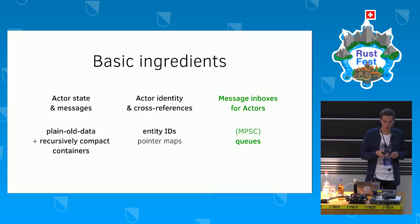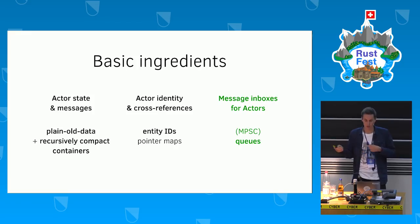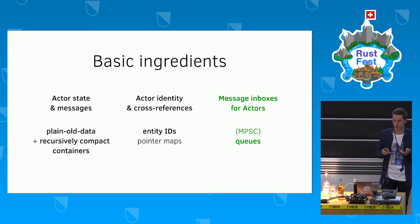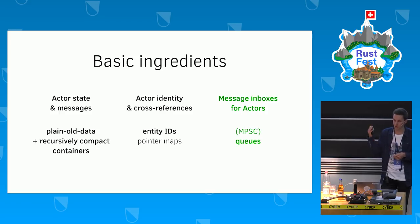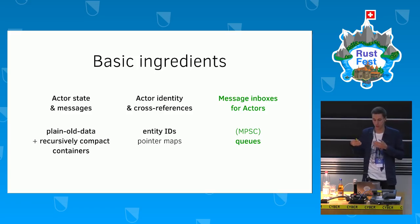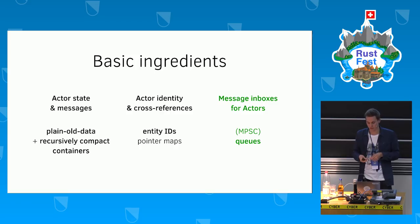To represent actor state and messages I could use my plain old data plus recursively compact containers. For actor identity and references between actors I could use entity IDs and pointer maps. The only thing I was missing were the message inboxes for the actors where incoming messages are stored — for that I used a simple queue per actor type in the single-core case, and in the multi-core case a multi-producer single-consumer queue, which is really easy to synchronize in a fast way.